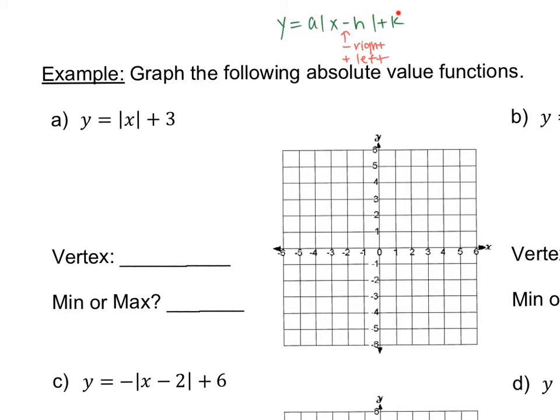When it's outside, like this plus k here, if you have a positive sign it means up. If you have a negative sign it means down. And then the number in front of x, the a here, is your slope. That helps you determine how to graph your absolute value function.